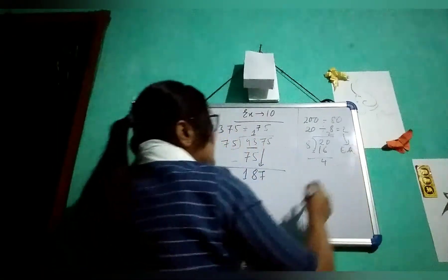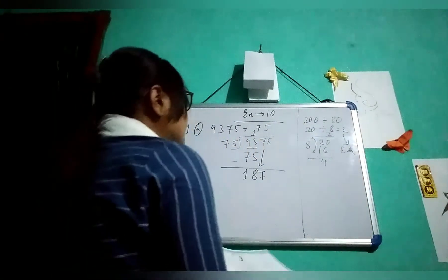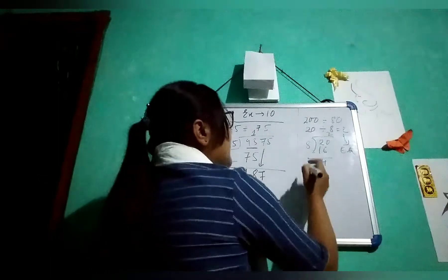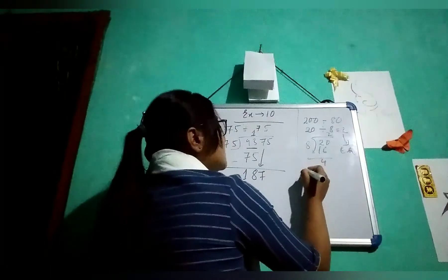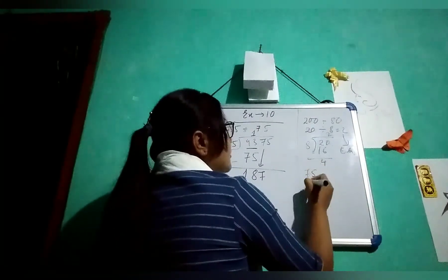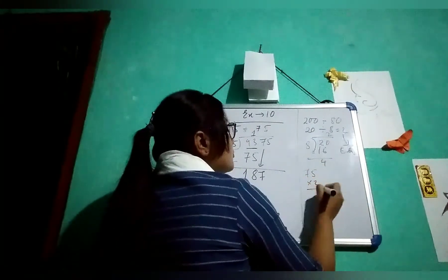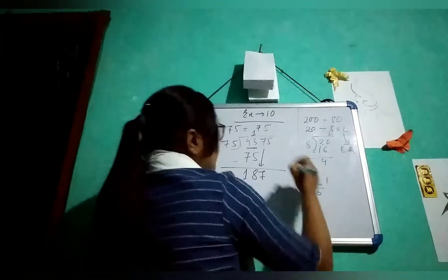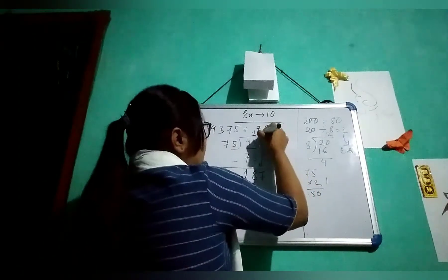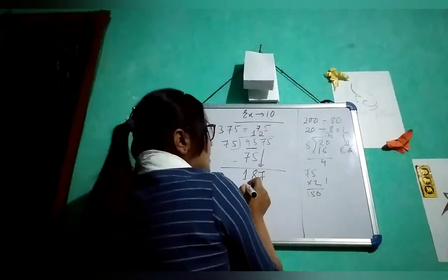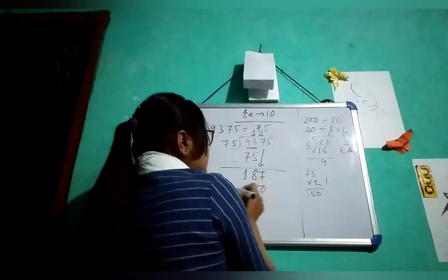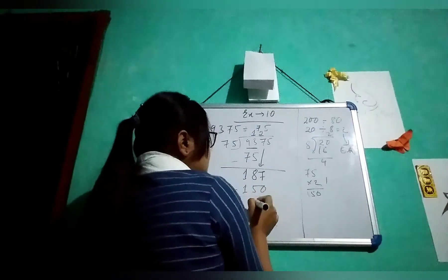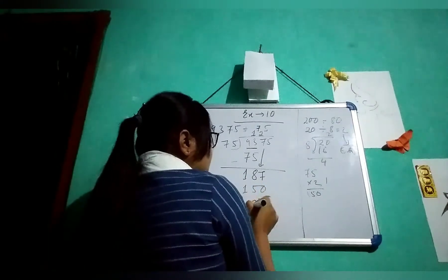You multiply with 2. Is it nearby or not? 75 into 2: 10, 1, 14, 15 — so 150. You can take this one. So 150 if you do minus, you will get 37.